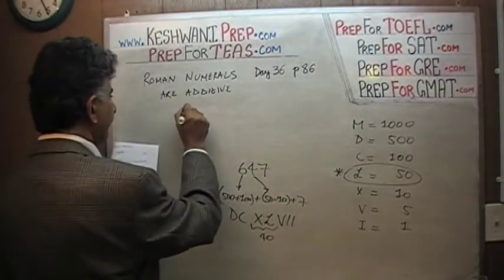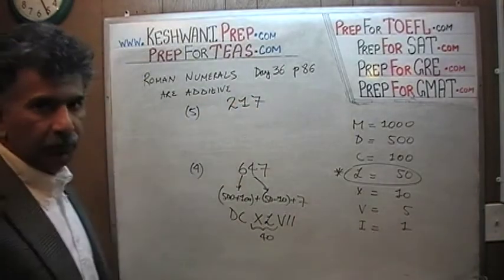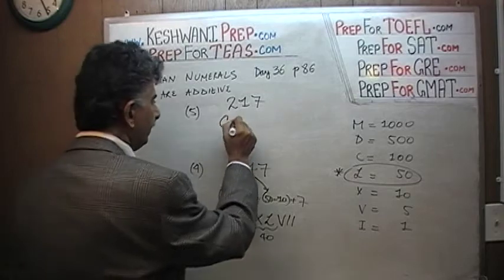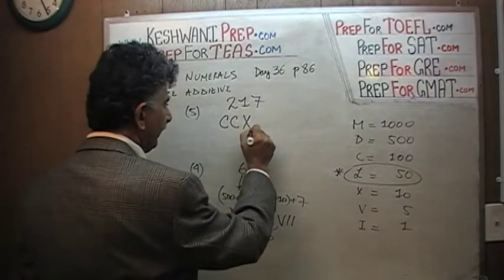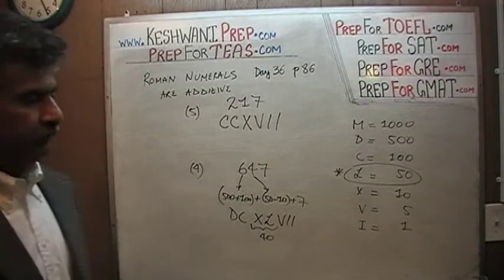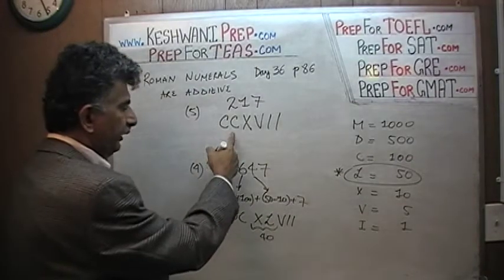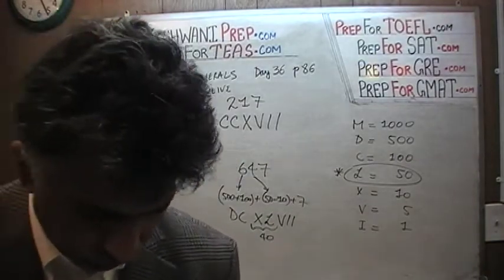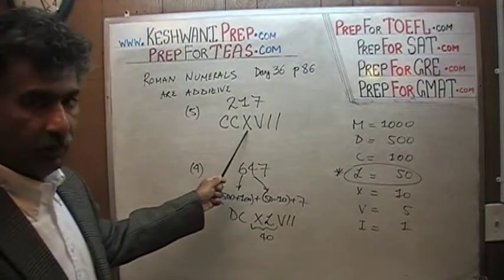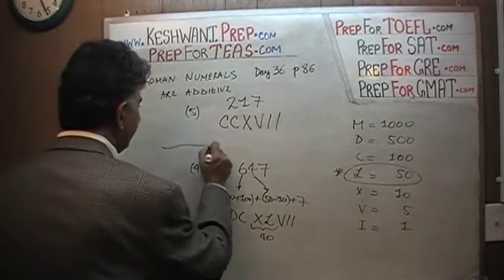Number five: two hundred and seventeen. Can you do it on your own? Two hundred and seventeen is straightforward — a hundred plus a hundred plus seventeen, which is ten, five, one, and one. So CC for 200, X for 10, V for 5, and II for 2. That's two hundred and seventeen.